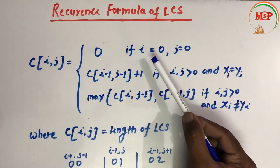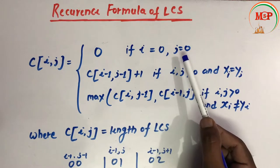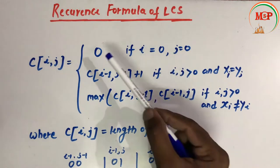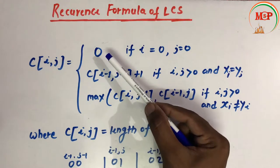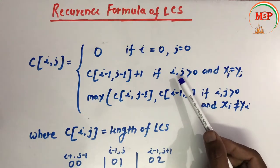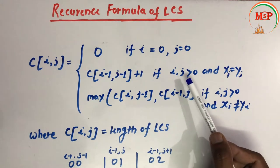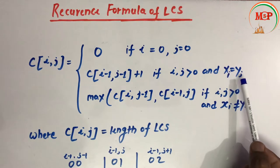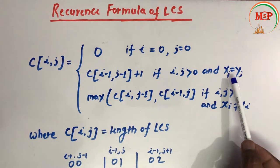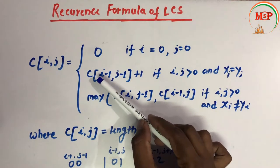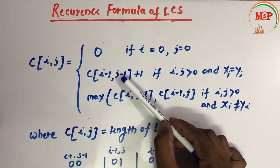So if the row value and column value are both 0, we solve accordingly. Otherwise if the i value is greater than 0, we compare characters with each other. If the characters match each other, then we compute c[i-1][j-1] plus 1.